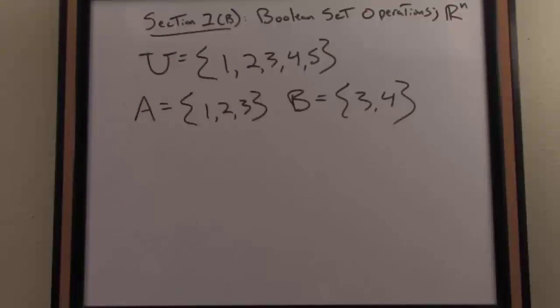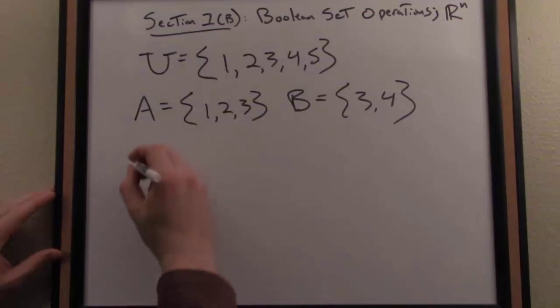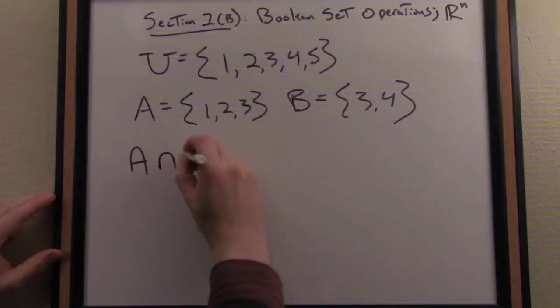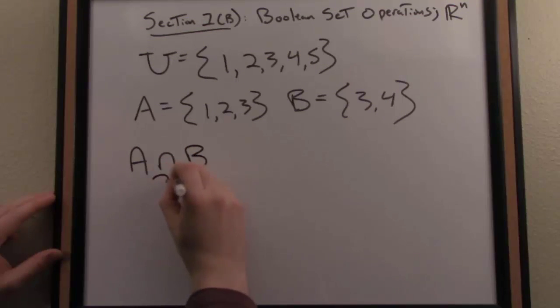So let's then continue talking about basic Boolean set operations. We discussed the union. Another common Boolean operation is the intersection of two sets. And I would write that just with our U symbol flipped here. So this is read intersection. So I would say A intersect B, or the intersection of A and B.